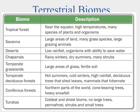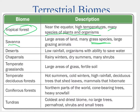Terrestrial biomes are the different land areas to live in, defined by long-term climate conditions. Starting at the equator, we have the tropical forest — high temperatures, lots of moisture, and enormous biodiversity. Moving out we have the savannah — large areas of land with grasses, large grazing animals, like the African savannah with wildebeest migrations. Then at low rainfall we get the desert, where organisms are adapted to save water; most deserts are warm but some are cold.